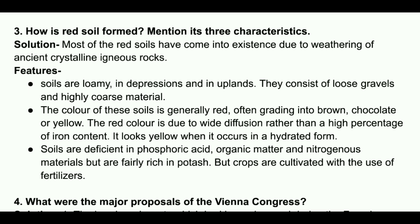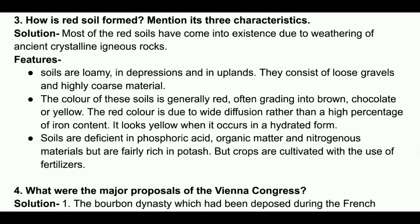The red color is due to wide diffusion of iron rather than a high percentage of iron content. It looks yellow when it occurs in a hydrated form. Soils are deficient in phosphoric acid, organic matter and nitrogenous materials but are fairly rich in potash; crops are cultivated with the use of fertilizers.